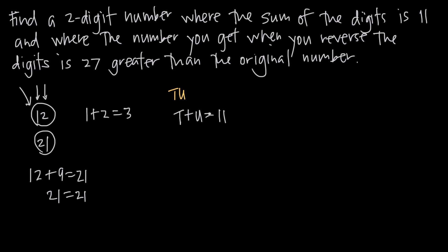This equation here deals with the sum of the digits, but when we're talking about the original number, like for example, if we were talking about 12 here, how would we get to 12 if we put this in the format tu, tens place, units place?